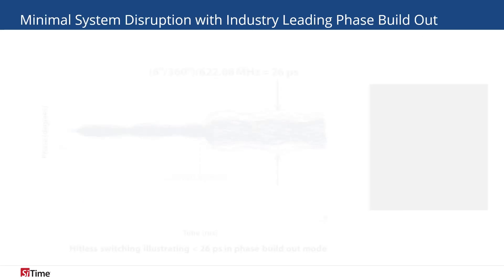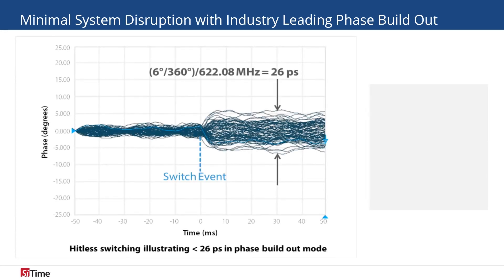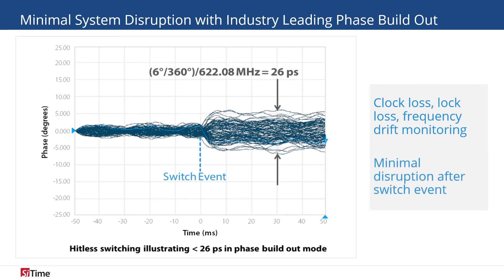With timing being an important factor in 5G O-RAN, losing lock with a clock reference can have detrimental effects on system performance. Sightime's Cascade Network Synchronizer actively monitors the input clocks for loss of clock, loss of lock, and frequency drift. With Cascade's 26 picosecond hitless switching in phase build-out mode, the system experiences minimal disruption after a switch event. With more people and systems reliant on the 5G network, this ensures the system remains operational at all times.